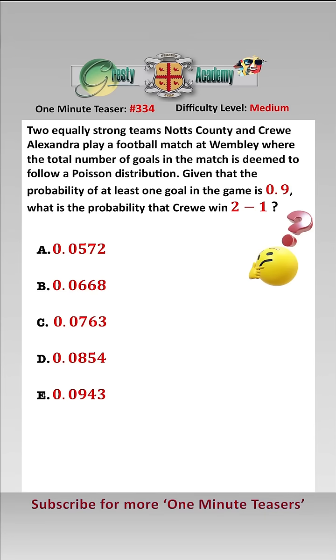So we're told that the total number of goals follows a Poisson distribution, therefore x is a Poisson, and we need to find lambda.